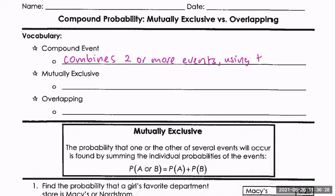So the first type uses the word 'and' to link two events — like the probability of drawing a king and a club. The second type uses the word 'or.' We're going to first look at the 'or' situations, which are the same as the union symbol we talked about. I'll talk about notation all throughout as well.